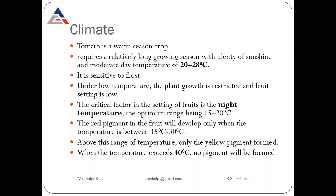Under low temperature, plant growth is restricted and fruit setting is low. It is a warm season crop and its growth will be restricted and fruit setting will also be low if temperature is low. Night temperature is a critical factor in the setting of fruits, so night temperature should be in the range of 15 to 20 degrees Celsius at the time of fruit setting; otherwise fruits will not set properly.